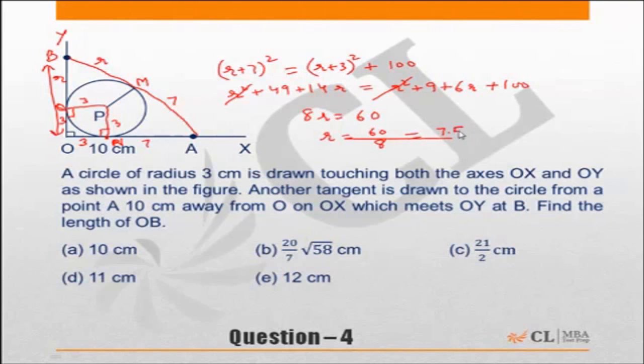So if R is 7.5 and this is 3, the total distance OB will be 7.5 plus 3, which is 10.5 or 21 by 2. Hence my answer will be C.